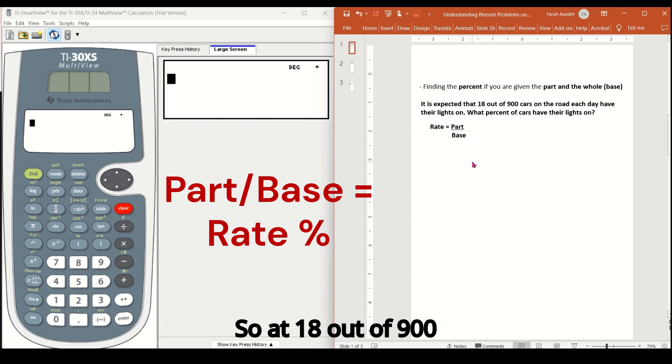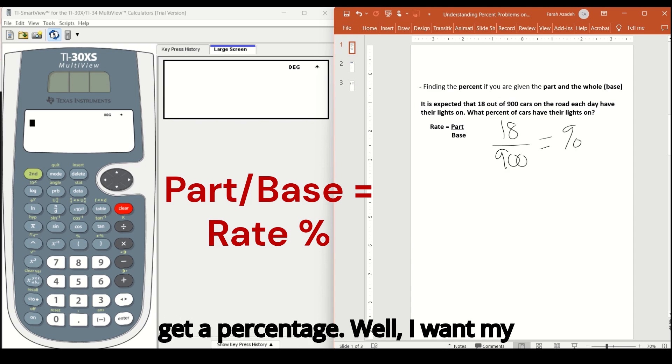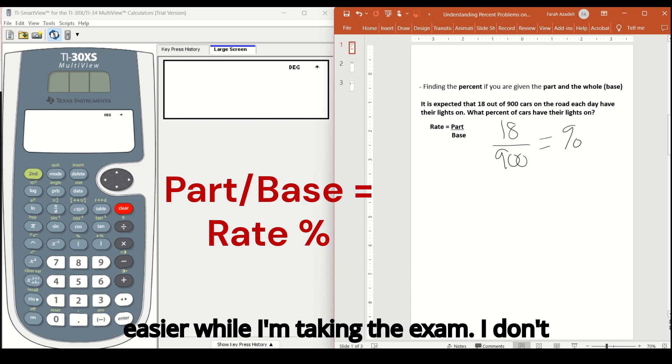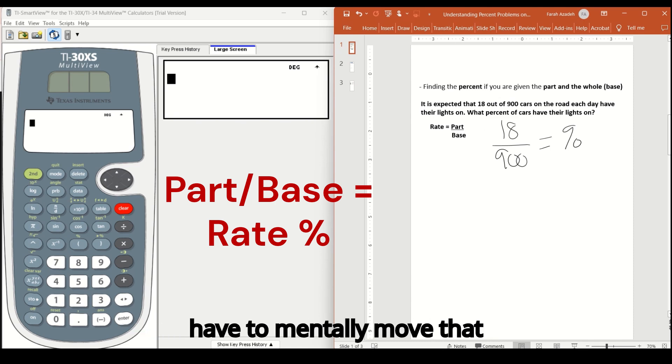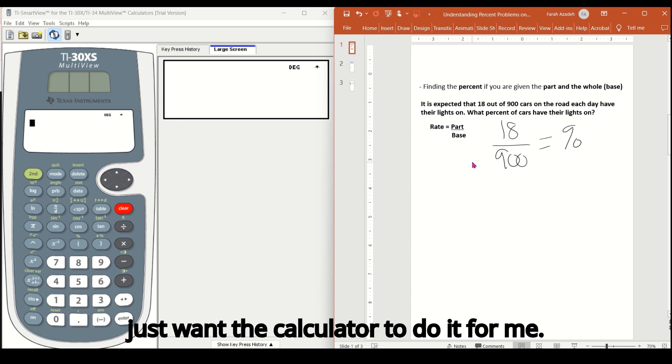So let's go ahead and figure this one out. So if 18 out of 900 cars, so I have 18 as my part, 900 as the base, and I'm going to get a percentage. Well, I want my calculator to give me the answer as a percent because I want to make life easier while I'm taking the exam. I don't want to get a decimal as an answer and have to mentally move that decimal point over to the right two spaces or multiply that by a hundred to get the percent. I just want the calculator to do it for me.